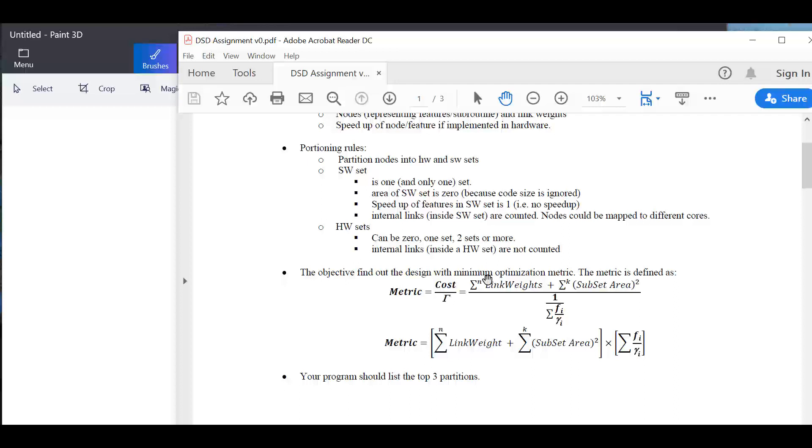Internal links between the software set are counted in this function. In terms of the hardware sets, which you can have none or one set or two sets or how many sets you want, internal links in a single hardware set are ignored.